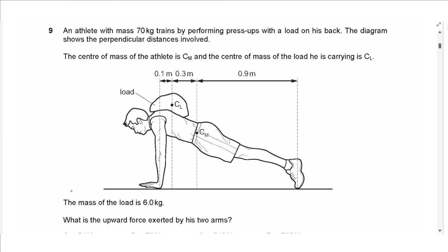Question 9: An athlete of mass 70 kg performs press-ups with a load on his back. The centre of mass of the athlete is Cm and the centre of mass of the load is Cl. The weight of the athlete (70 × 9.8 N) acts downward from Cm, and the weight of the load (6 × 9.8 N) acts downward from Cl. The person is treated as a rod pivoted at his foot. Both weight forces create anti-clockwise moments about the pivot.